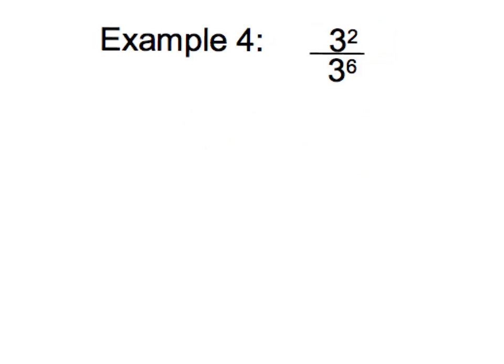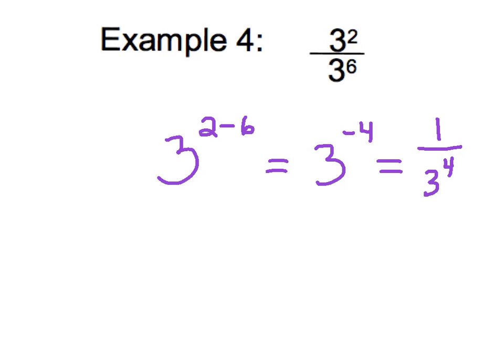Let's take a look at example 4. This problem looks like a simple quotient rule problem. I have the same base number, so I'm going to subtract my exponents. However, when I do 2 minus 6, I get 3 to the negative 4. When evaluating exponents, we never want to leave a negative exponent in our final answer. So using the rule we talked about today, we change 3 to the negative 4 to 1 over 3 to the positive 4. Since this is a numerical exponent, we can evaluate: 1 over 3 times 3 times 3 times 3, which equals 1 over 81.